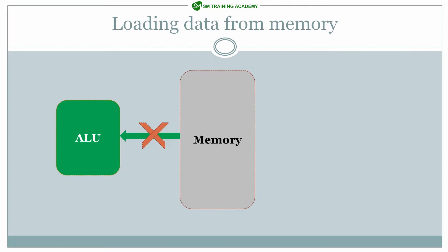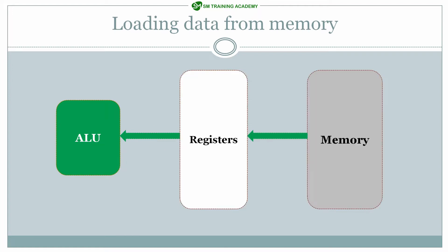Modern day processors most widely use registers in between the memory and the ALU. That is, the data from memory which needs to be processed will be stored in registers temporarily, and then from those registers the ALU operations will be performed. These registers are much faster than memory in the ARM Cortex-M processor, and based on the architecture, the number of registers available in an ARM processor varies.